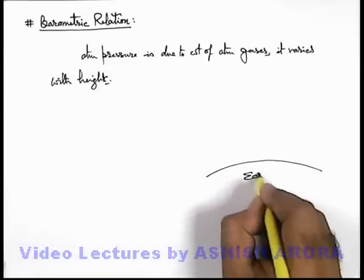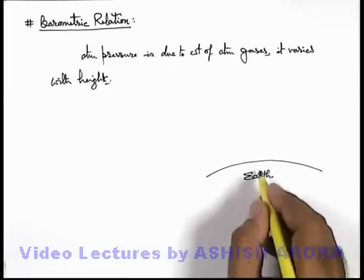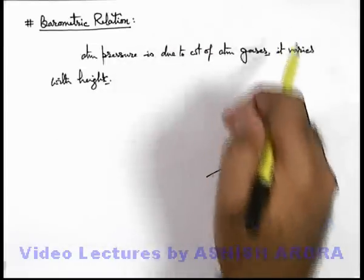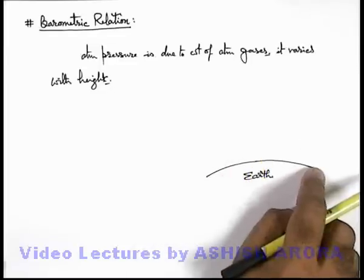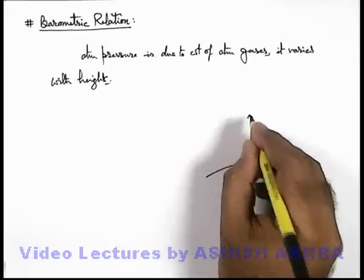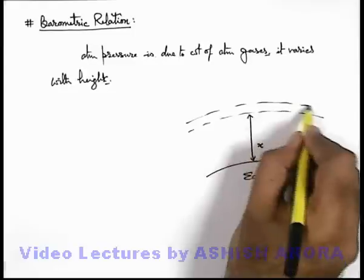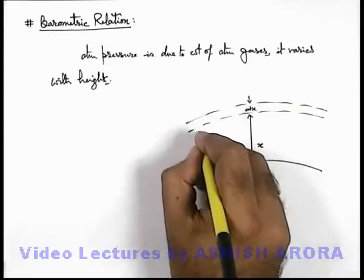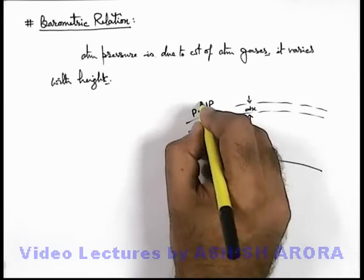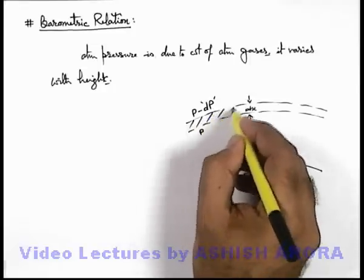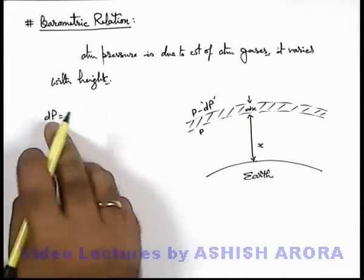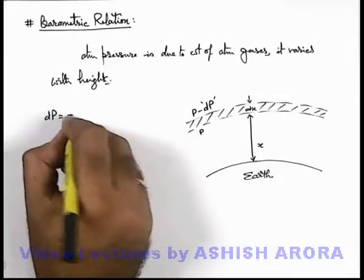If we consider our curved earth and the atmosphere extended up to a large height, at any point on earth, pressure exists due to the weight of atmospheric air. To calculate the variation of atmospheric pressure with height, let us consider at a height x from the earth's surface an atmospheric layer of width dx. The pressure just below this atmospheric layer will be p minus dp, where dp is the pressure due to the weight of this atmospheric layer of width dx.